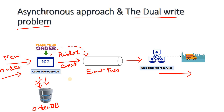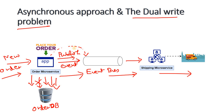The second time, both the Order DB write and the Kafka publish succeed, meaning the same order is placed twice — a duplicate. Conversely, if the Order DB write succeeds but the Kafka publish fails, the user sees their order as placed successfully, but it never goes for shipment because the event was never published to the event bus. Both scenarios show that dual writes create serious consistency problems.